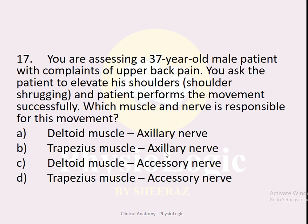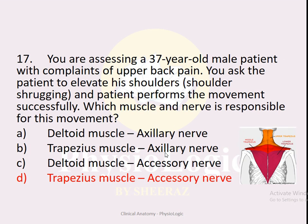MCQ number seventeen: A 37-year-old male with upper back pain is asked to perform shoulder shrugging and does so successfully. Which muscle and nerve is responsible? Options: A — deltoid supplied by axillary nerve, B — trapezius supplied by axillary nerve, C — deltoid supplied by accessory nerve, D — trapezius supplied by accessory nerve. The correct option is D — shoulder shrugging is performed by the trapezius muscle, supplied by the 11th cranial nerve, the accessory nerve.